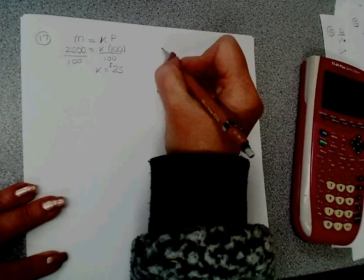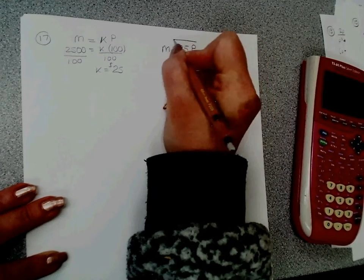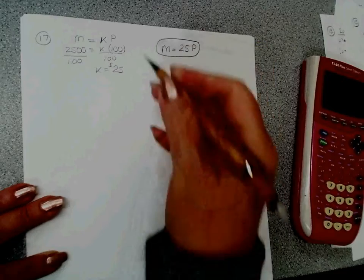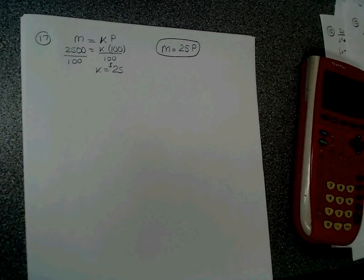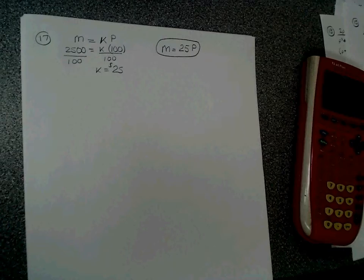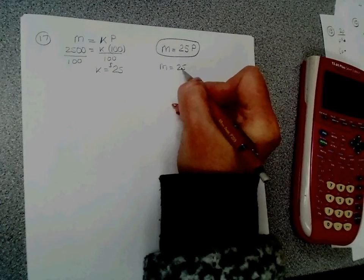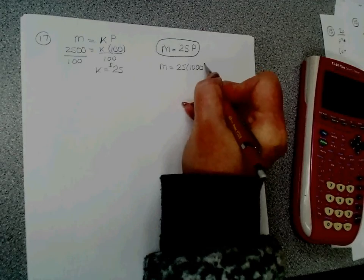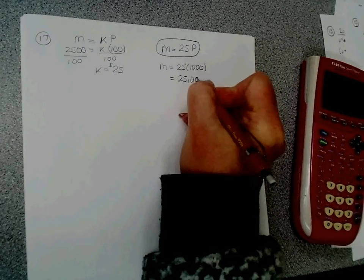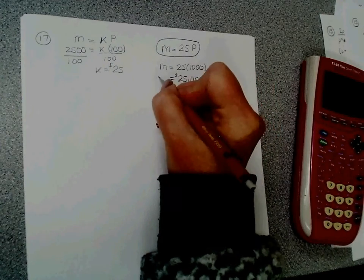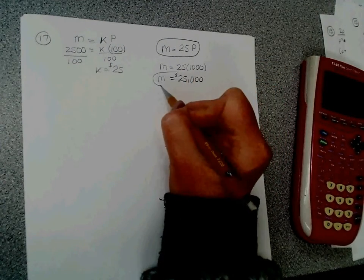So the first part said write an equation with a number for k. So that's my equation: money raised equals 25 times participants or attendees or people. Now it says how much money will be raised if a thousand people attend this year? 25 times a thousand is 25,000. So they will raise $25,000 if a thousand people come this year.